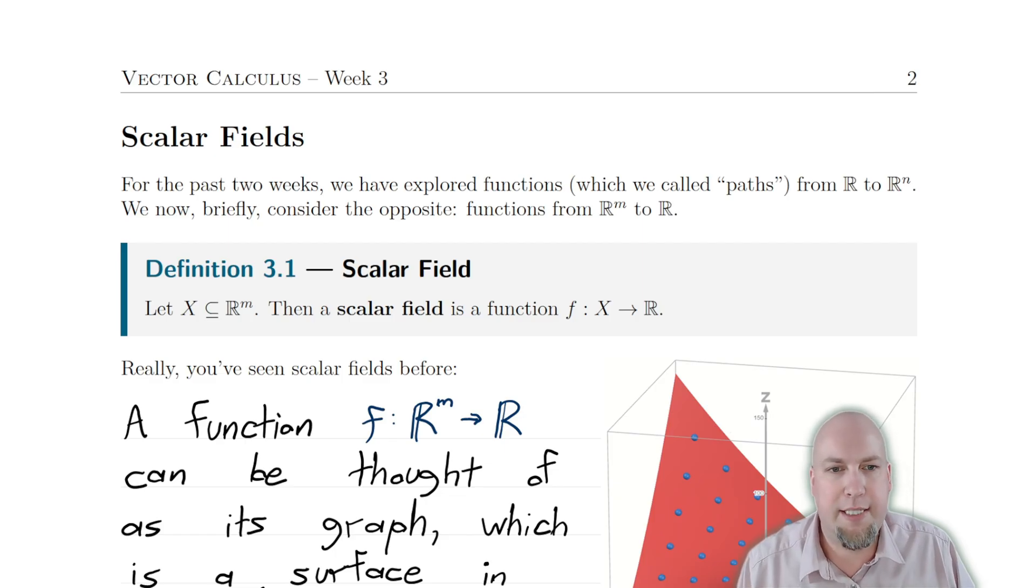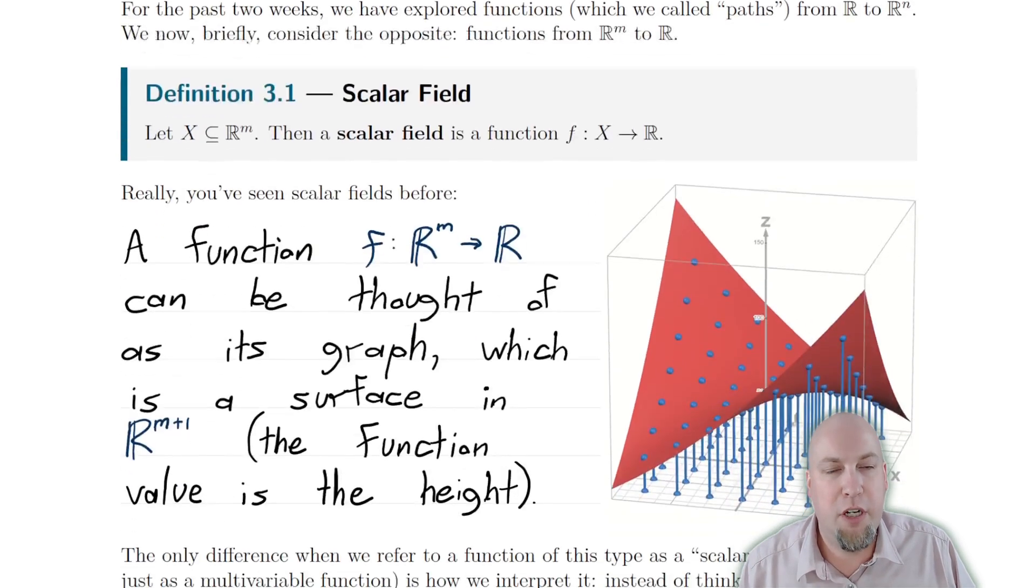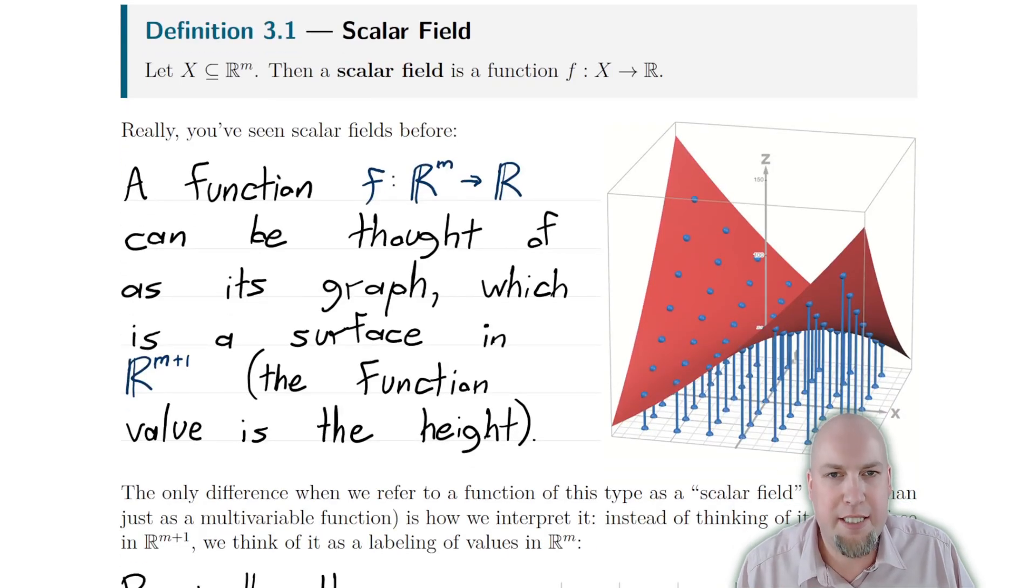Well, a scalar field instead just asks that the output space is one dimensional. That's what makes it a scalar field. You've got a function from some domain living in any dimension, so X here is just the domain of the function, and the output is one dimensional—the output is just a real number. That's the important point.